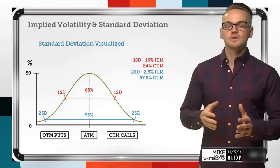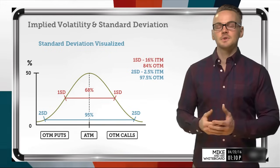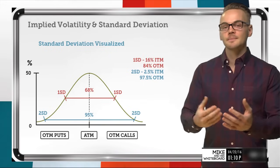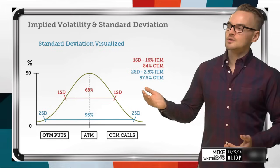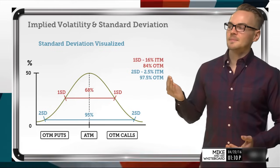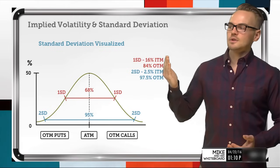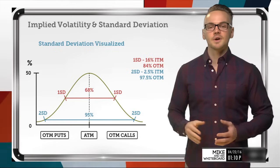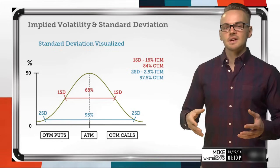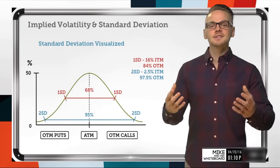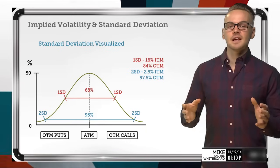So depending on whether you use the thinkorswim platform and look at probability of being in the money, or the dough platform and look at probability of being out of the money, these are the values you're looking for on either side of the market to determine those standard deviation ranges. So how does implied volatility change standard deviation?